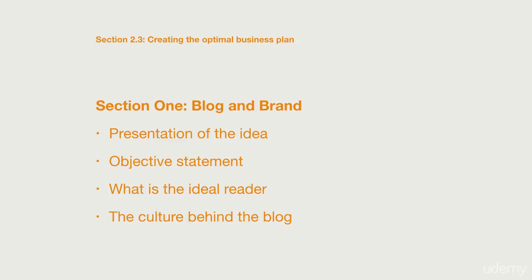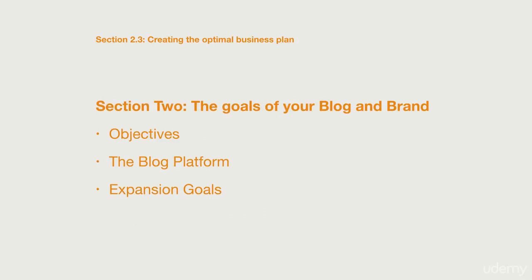The culture behind the blog: each blog has its own culture. You must determine what style of tone to write in, what types of images people will end up seeing, and what feeling your readers will feel. Section 2: The goals of your blog and brand. Objectives — list three objectives that your blog has to meet in the next six months or one year.